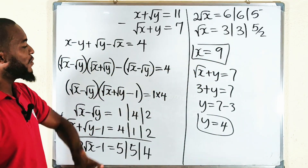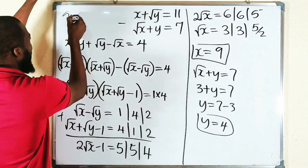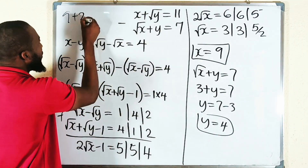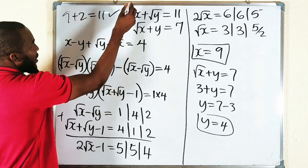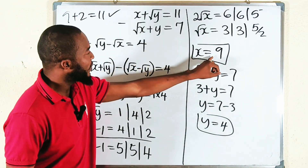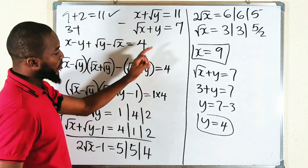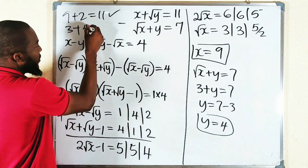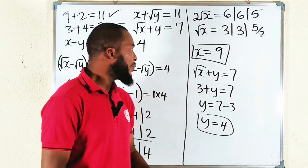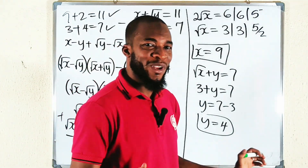Let's verify. If x is 9, then x plus square root of y is 9 plus square root of 4, which is 9 plus 2, and that equals 11. You can also check square root of x plus y: square root of 9 is 3, plus 4 equals 7. So, the solution to this problem is x equals 9 and y equals 4. As simple as that.